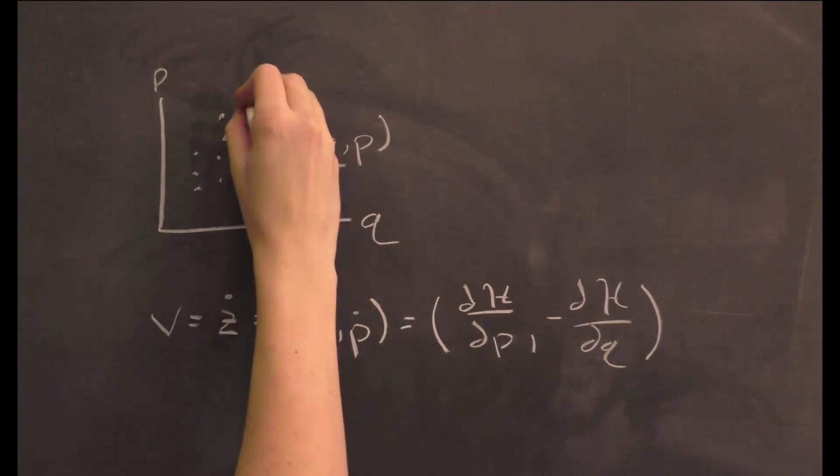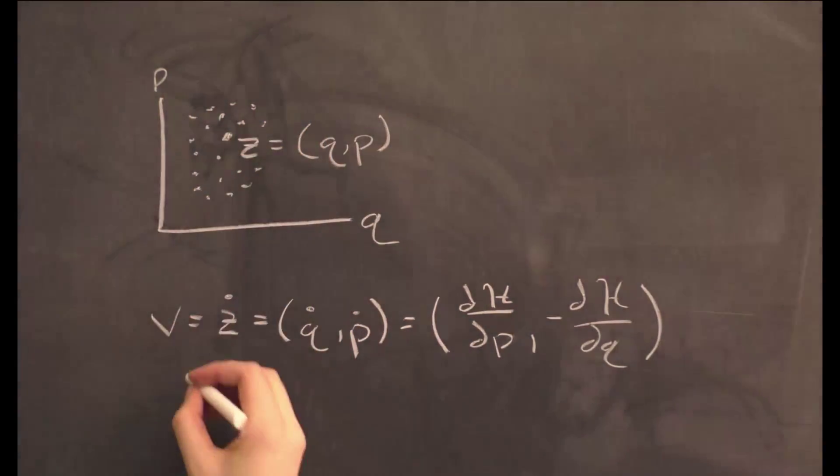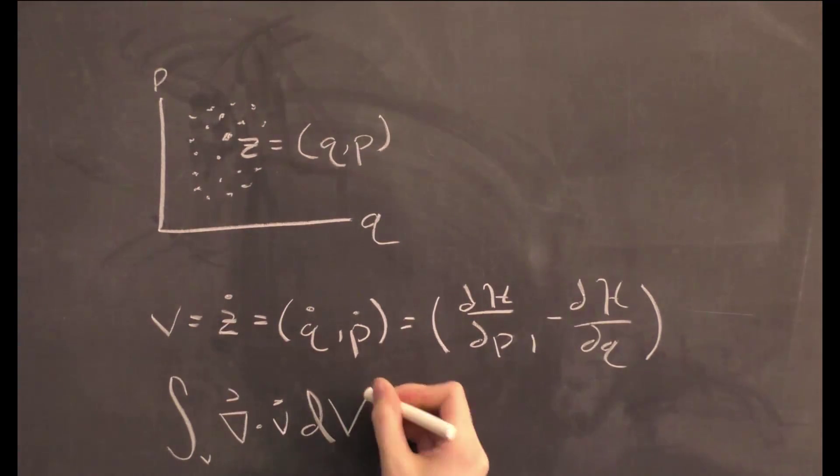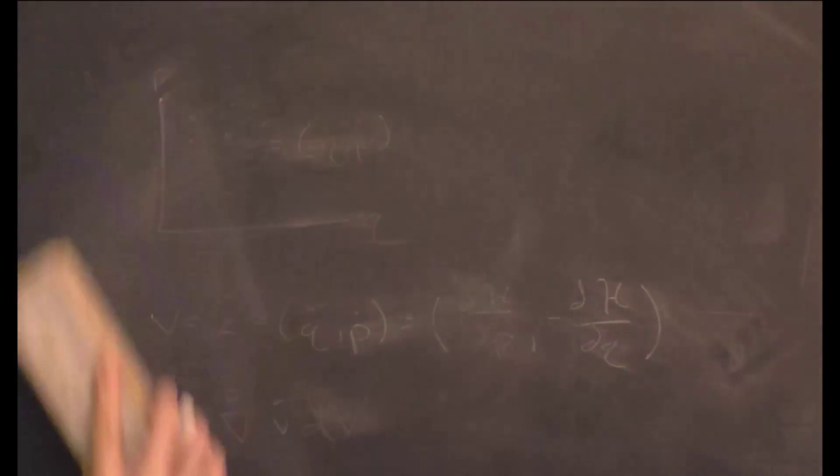If we have many of these points, all moving through phase space, we can find the change in volume of the surface they define using the formula from earlier, the integral over V of the divergence of velocity times dV.